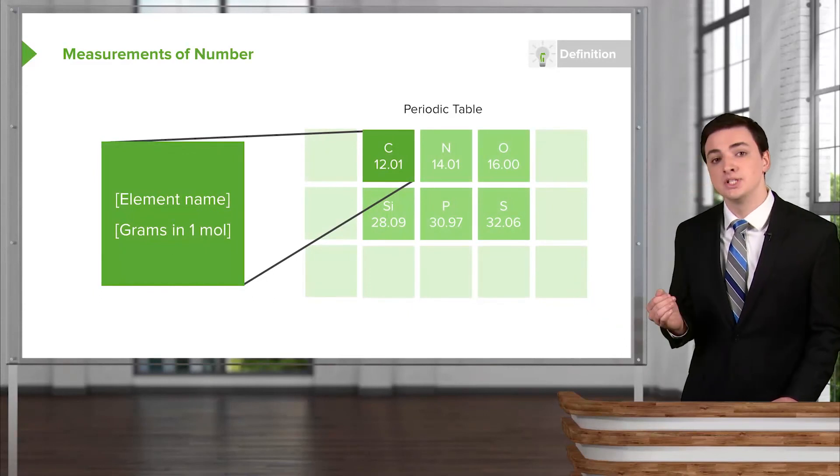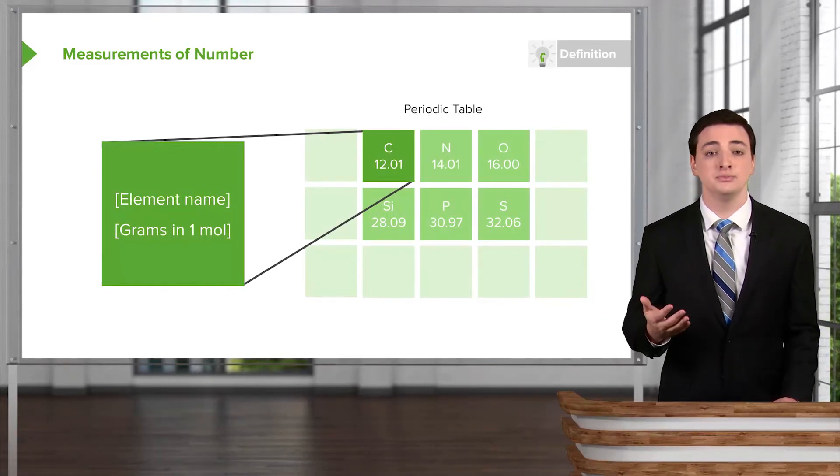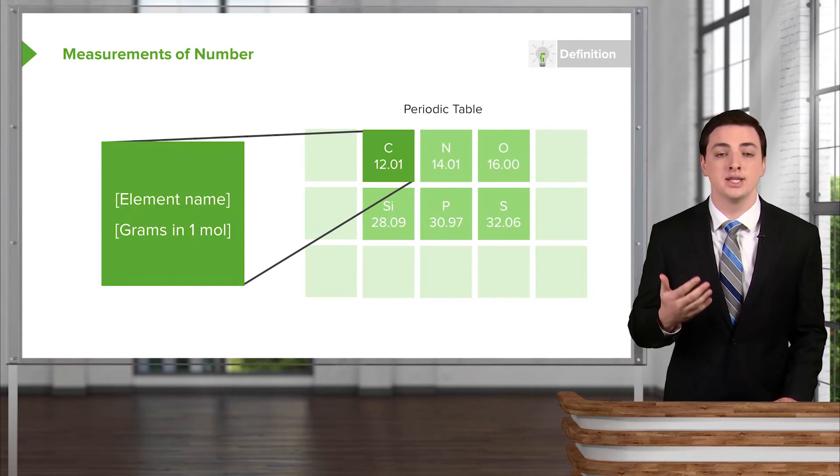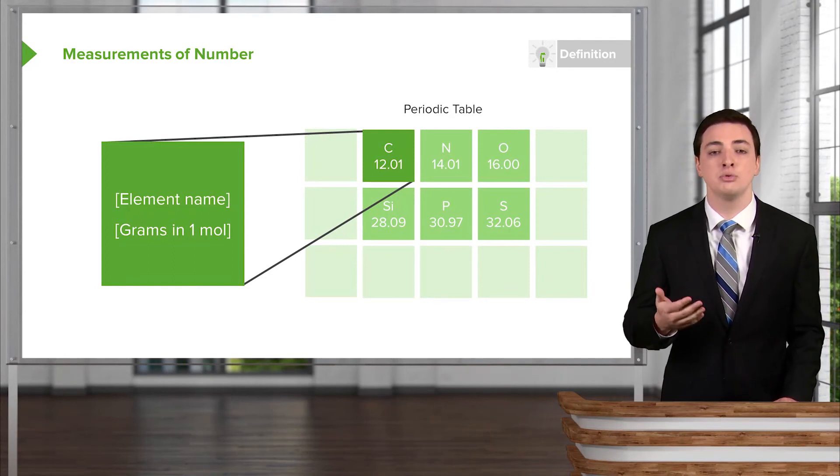For example, we have here carbon. If I took one mole of carbon, just scooped it up from the Earth somewhere, the number of grams in that mole of carbon would be 12.01.